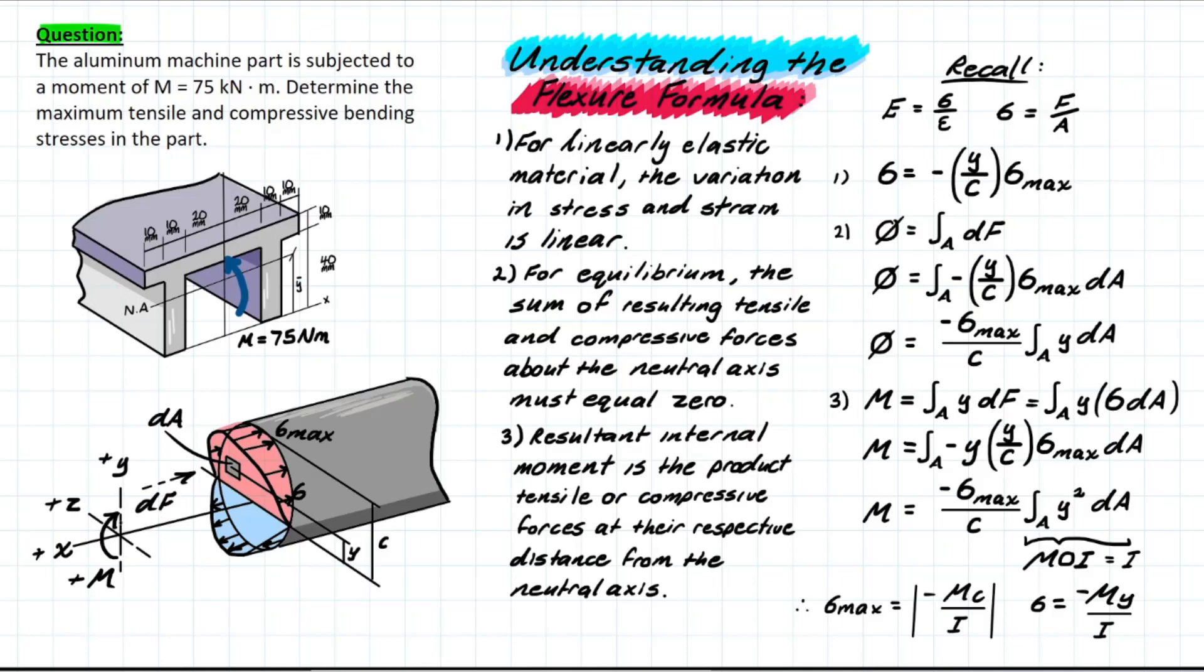We're also going to notice that this moment is going to be representing the positive moment convention. And the reason it's doing that is because it's following the basic principles of the right-hand rule. If you imagine that you grabbed the z-axis with your right hand and you pointed your thumb in the direction of the positive z direction, the moment is going to be curling in the same direction as your fingers, which is where that convention comes from.